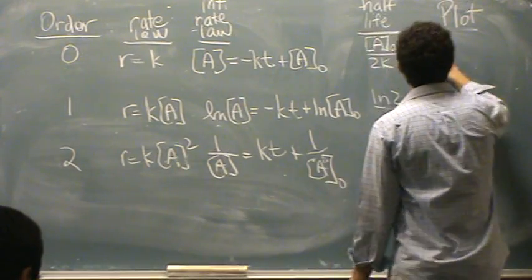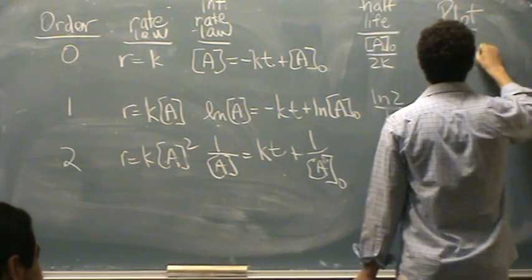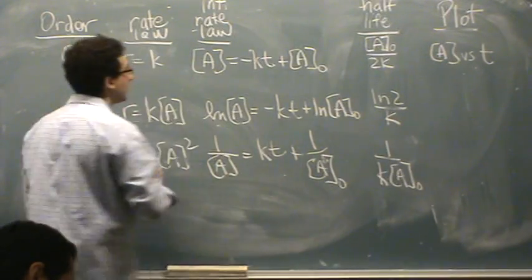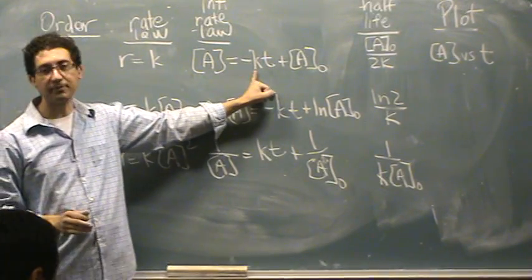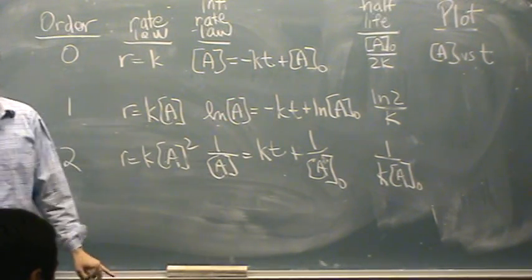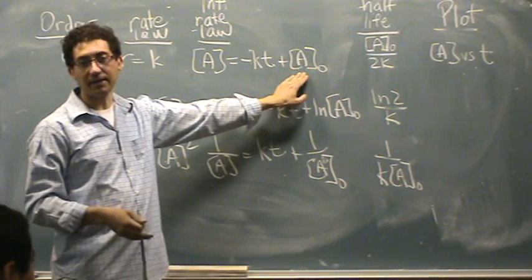So here, if you plot a versus t, a versus t, you get a line. The slope is minus k. So if you multiply this slope by minus one, you'll have your rate constant. And your y-intercept will be a-not.